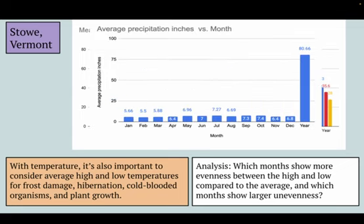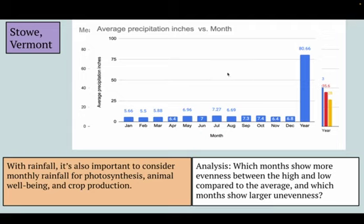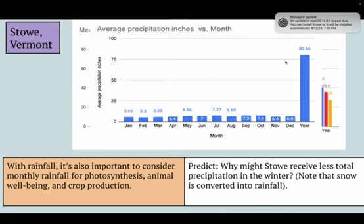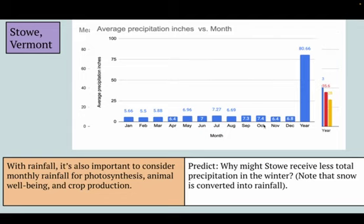The other thing that we can look at is rainfall. With rainfall, it's important to consider monthly rainfall for photosynthesis, animal well-being, and crop production — when we grow our foods. This is recorded in inches, and it's important to note that we can convert snowfall into inches of rain. My question for you is: why might there be less precipitation in the winter, noting that snow has been converted into rainfall? Why do you think there's less precipitation in cold months as opposed to warm months?